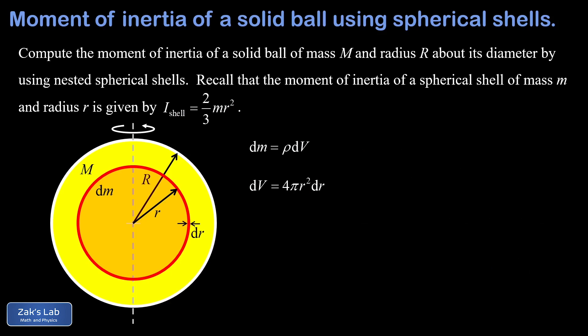So our setup is really coming together now that we know how to write down dm. We're going to say our moment of inertia contribution for this spherical shell is two thirds times the mass times the radius squared. Again, that's just using the previously derived formula for the moment of inertia of a thin shell.